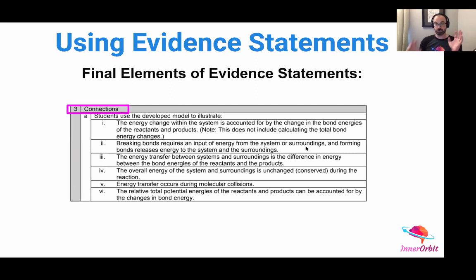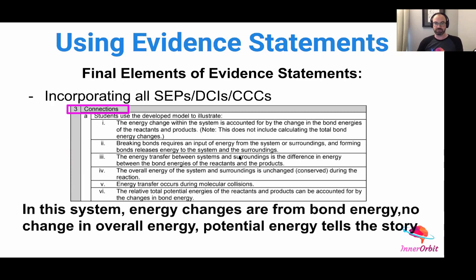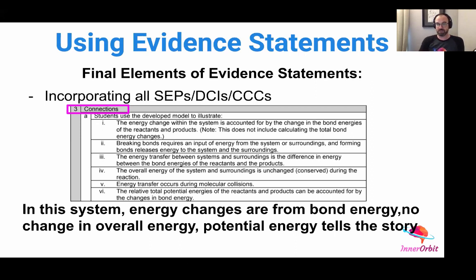The third part of the evidence statements — the final elements — are much more complex and incorporate all SEPs, DCIs, and cross-cutting concepts. Students are using a model to illustrate all of these different ideas: showing that there's energy change, breaking bonds, energy transferred, and energy transfer during collisions. Students need to draw a model — an image of a system — and show that all of these things are present. At the end of the evidence statements, this is a great litmus test for the complexity of your phenomenon. If students can draw a model to explain what's going on and it ticks these boxes — or at least a few of them — then you have something that is likely three-dimensional and complex enough to be a good phenomenon. If your phenomenon does not withstand the test of the last element of the evidence statements, you probably need to find something more complex to best assess students.